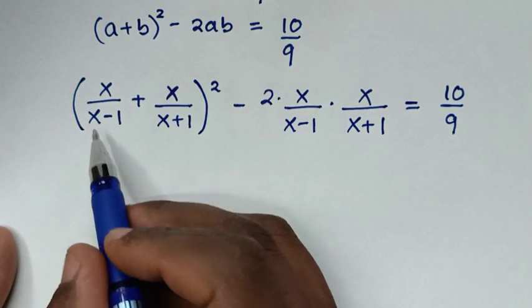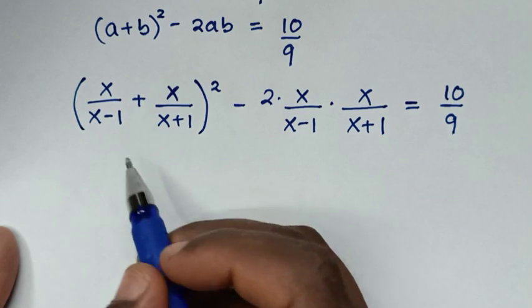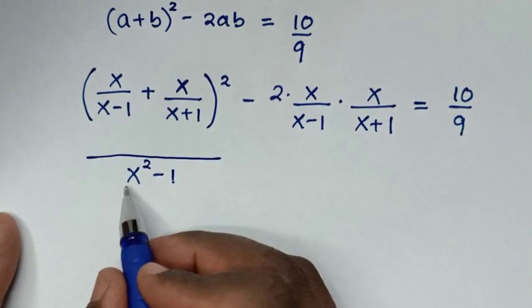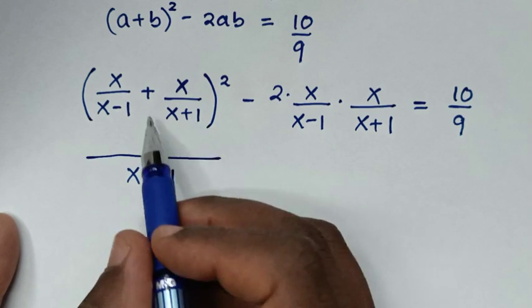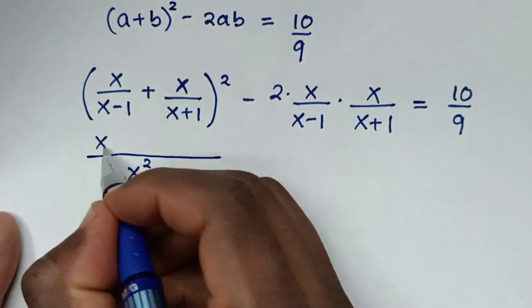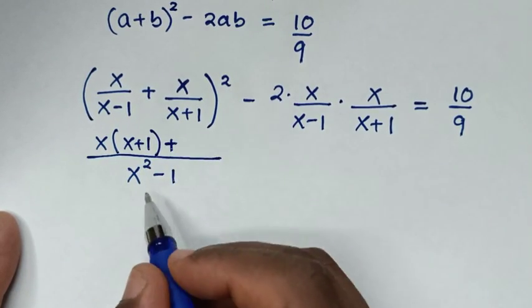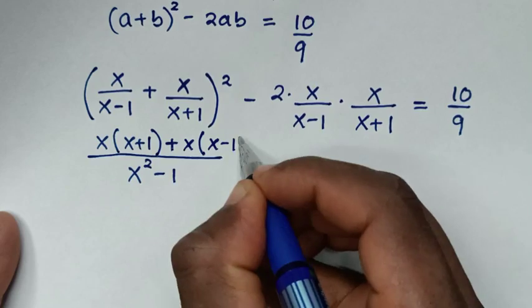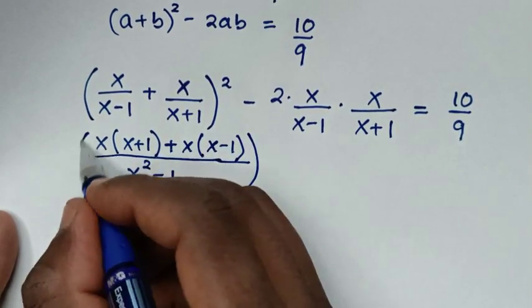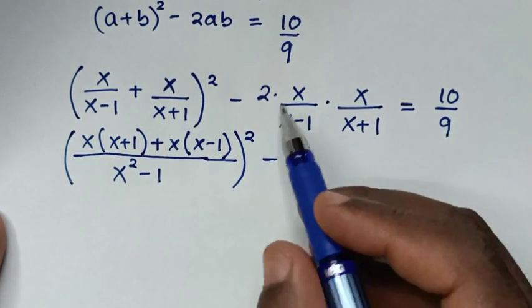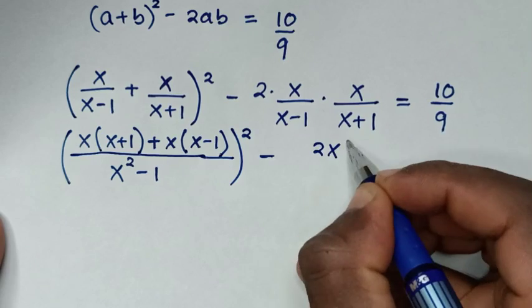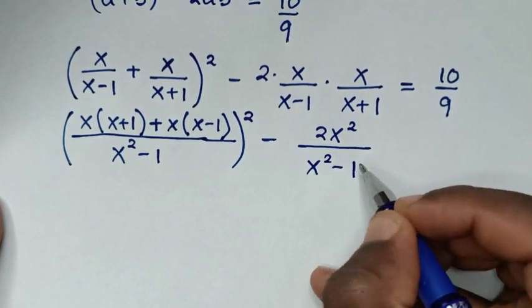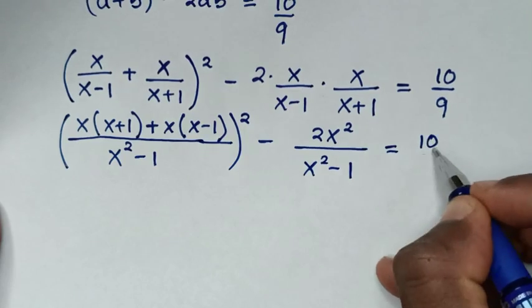Here the LCM is (x minus 1) times (x plus 1), which is x squared minus 1. Then x squared minus 1 divided by (x minus 1) is (x plus 1), so it gives x times (x plus 1). And x squared minus 1 divided by (x plus 1) is (x minus 1), giving x times (x minus 1). Squaring the sum, then minus 2x squared over (x squared minus 1), equals 10 over 9.